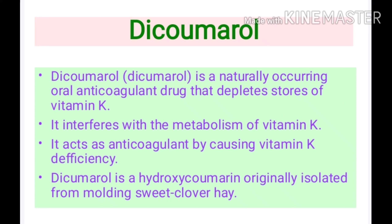Vitamin K is important for blood clotting because it synthesizes a lot of clotting factors for the normal blood clotting process. When there is a deficiency of vitamin K, it will adversely affect the normal process of blood clotting. Any substance which has the capacity to inhibit normal blood clotting can be called an anticoagulant. So dicoumarol acts as an anticoagulant by depleting vitamin K synthesis.